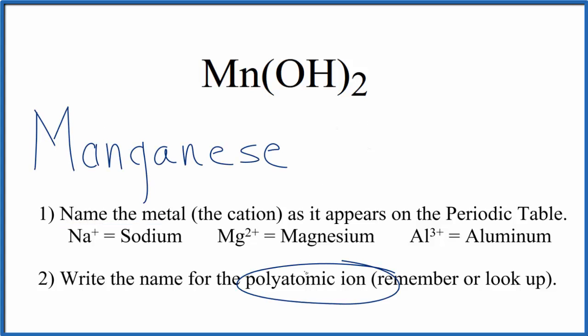Next, we write the name for the polyatomic ion. This OH is called the hydroxide ion. You either memorize this, or if you're allowed, you look it up. This is very common in chemistry, so it's a good one to memorize. So far, we have the name manganese hydroxide for Mn(OH)₂.